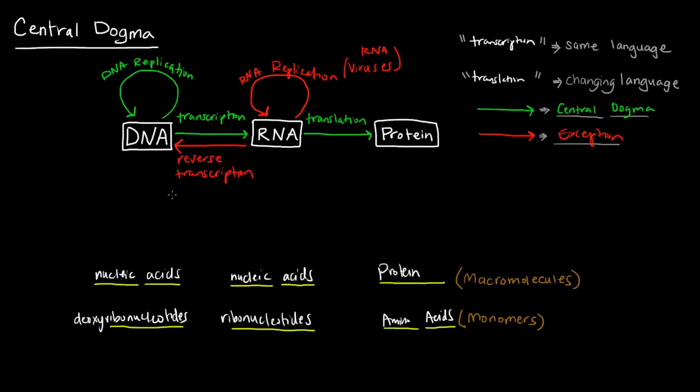So this is an example of where you would see reverse transcription is in retroviruses. Retroviruses are viruses that are RNA viruses that have an enzyme called reverse transcriptase, which allows them to turn their RNA into DNA. So an example is retroviruses.